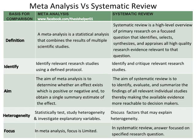In meta-analysis, statistically test study heterogeneity and investigate explanatory variables. Whereas in systematic review, discuss factors that may explain heterogeneity.